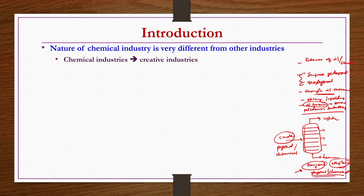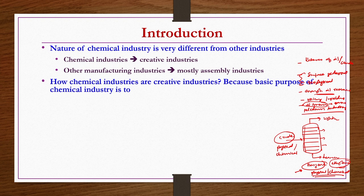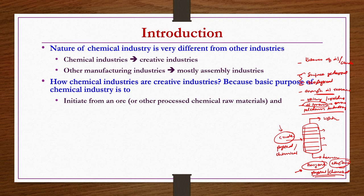Chemical industries are creative industries whereas other manufacturing industries are mostly assembly industries. The basic purpose of a chemical industry is to start with a raw material or ore. For example, to make steel, pig iron, or stainless steel, you take the iron ore.